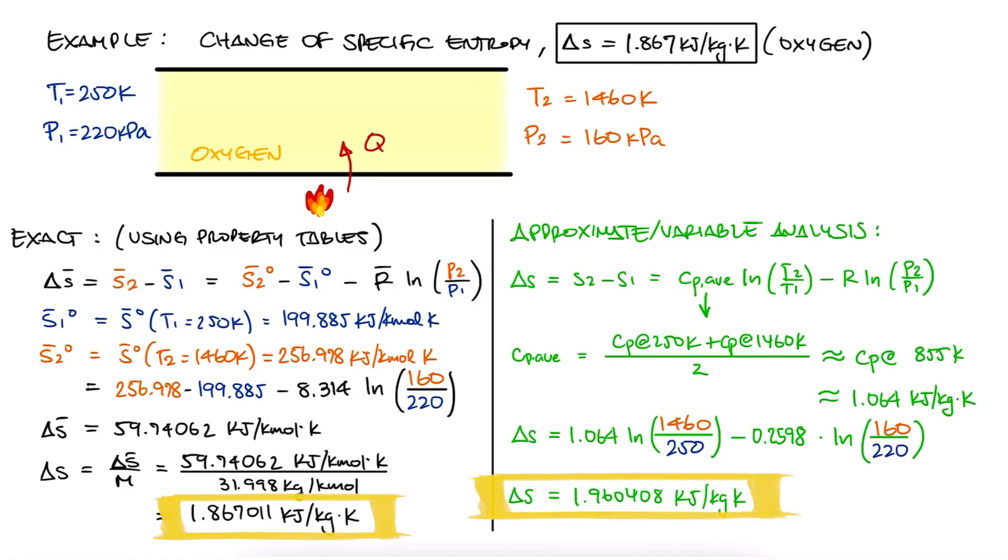Now you see how these two values differ. Of course, we're not only making a big assumption by saying we can just use a constant average specific heat, but we had to take the average of the specific heats as the specific heat of the average temperature. So, of course, if you can just use the exact approach, always use it!